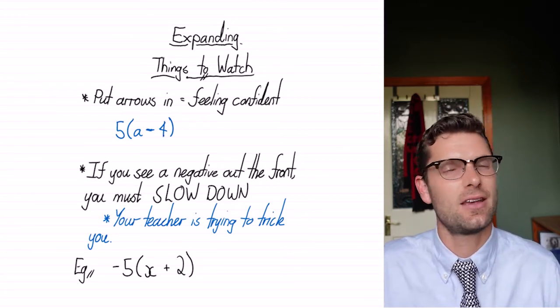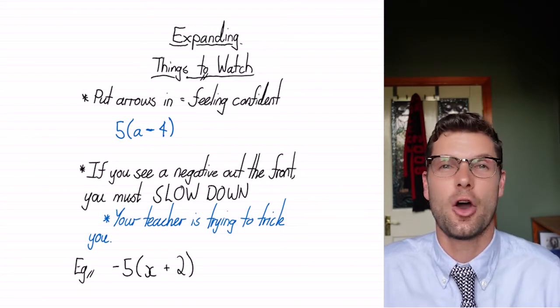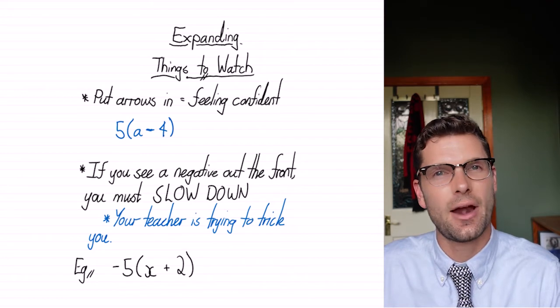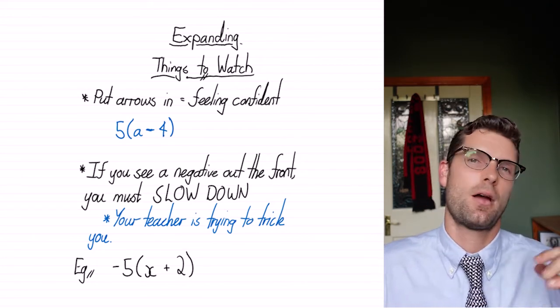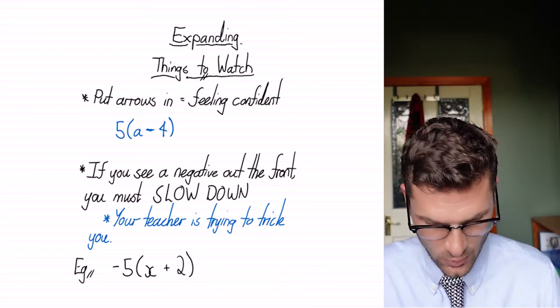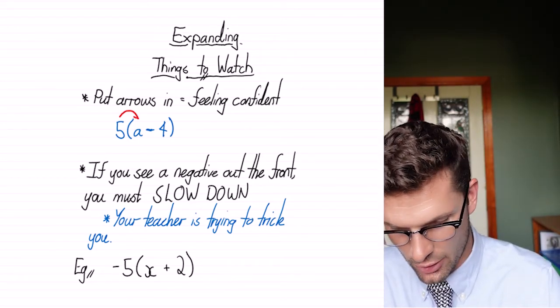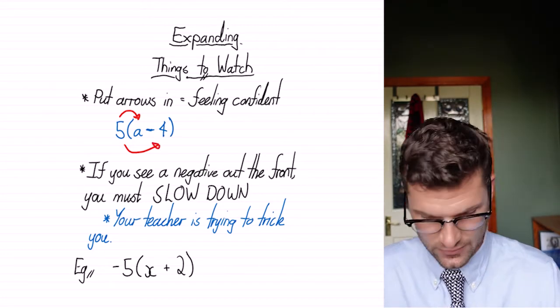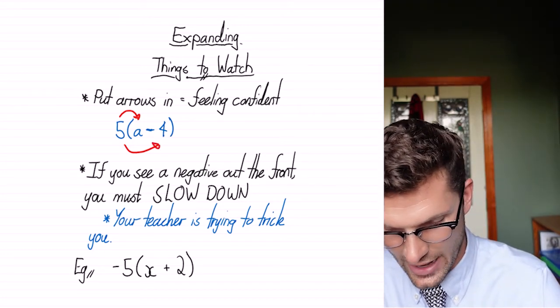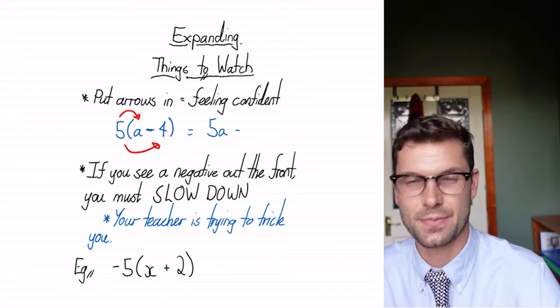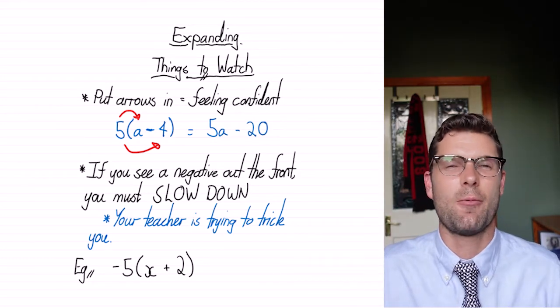So remember, if we're putting our arrows in, we're feeling confident with this. All you've gotta do is multiply what's inside the bracket, both terms, by what's outside. So for this one here, we've got five multiplied by the a and multiplied by the minus four. So this one would be equal to 5a minus 20. You're feeling great with that one.